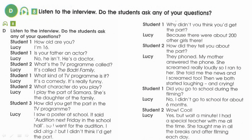'How did you get the part in the TV program?' — 'I saw a poster at school. It said: audition next Friday' — audition means a performance trial — 'in the school hall. So I went for the audition. I did alright, but I didn't think I'd get the part.'